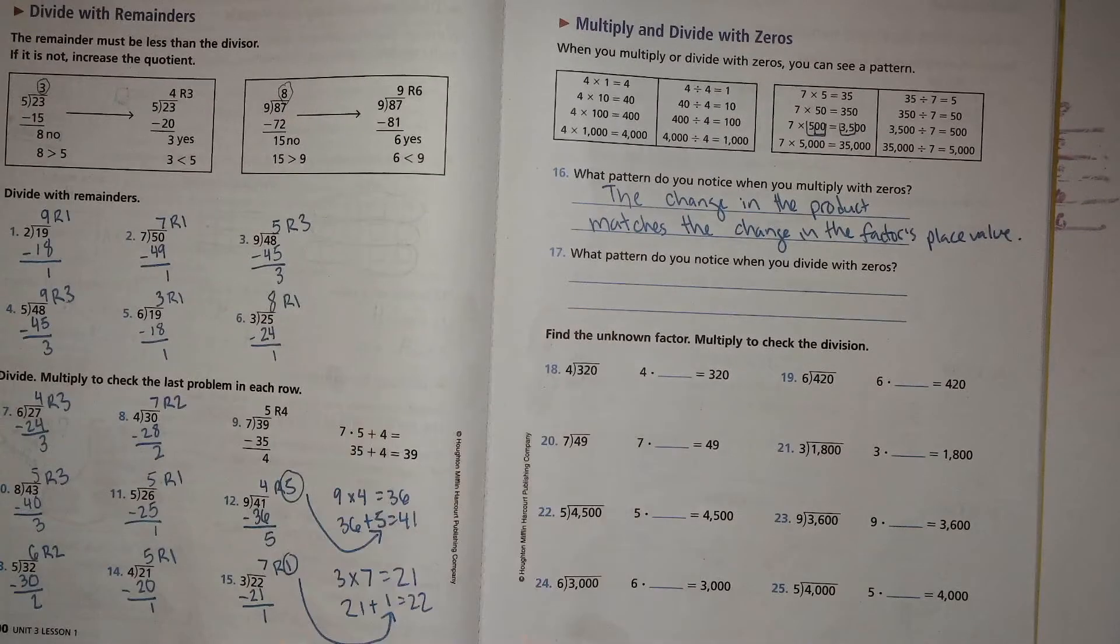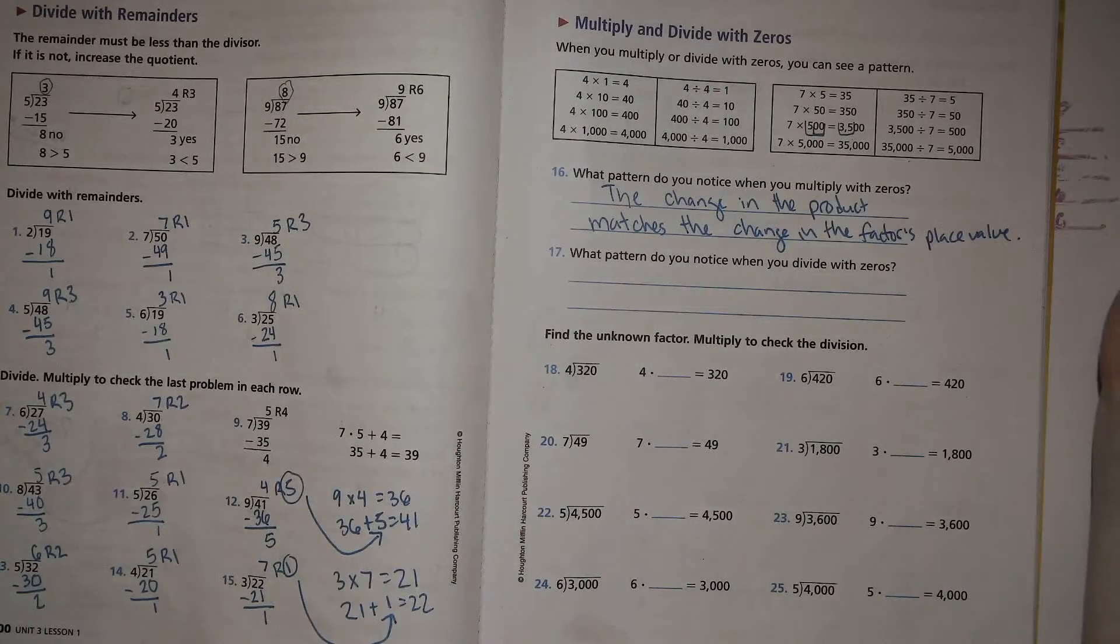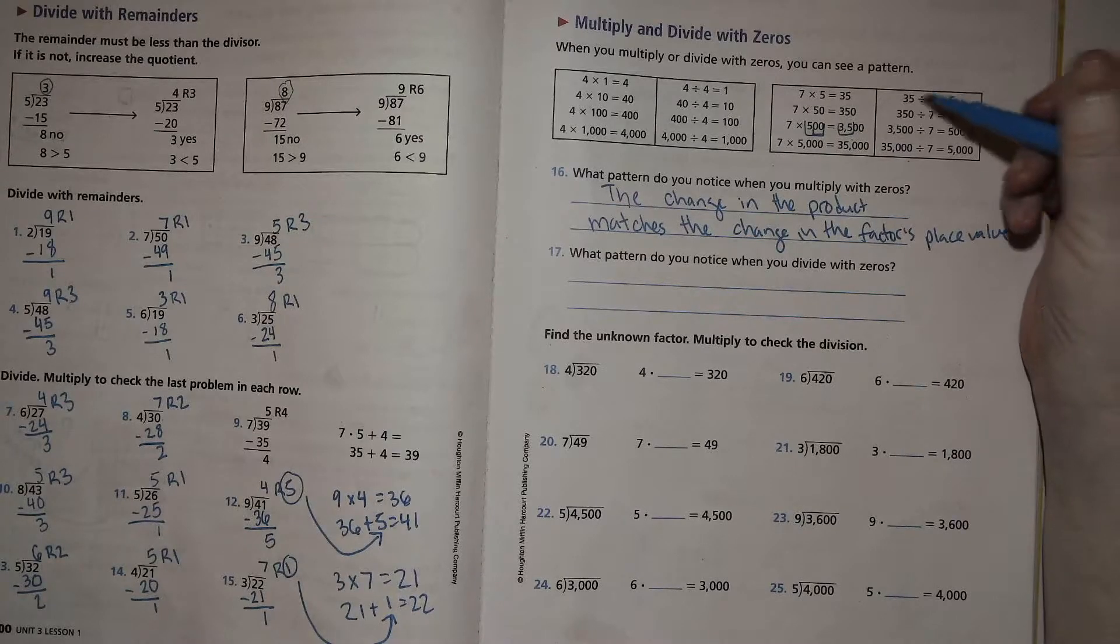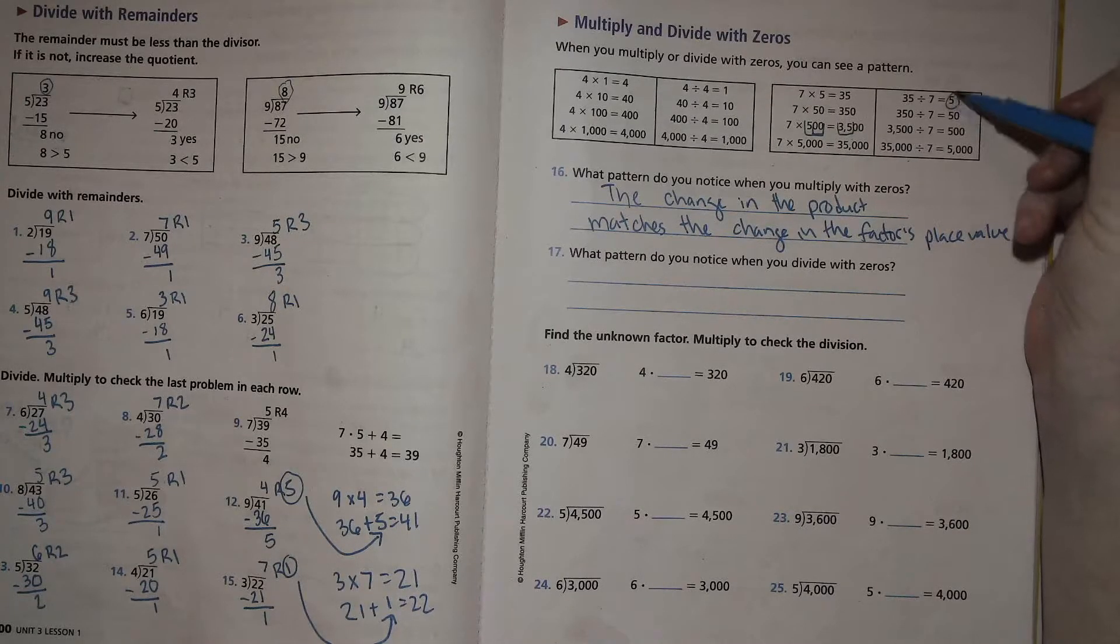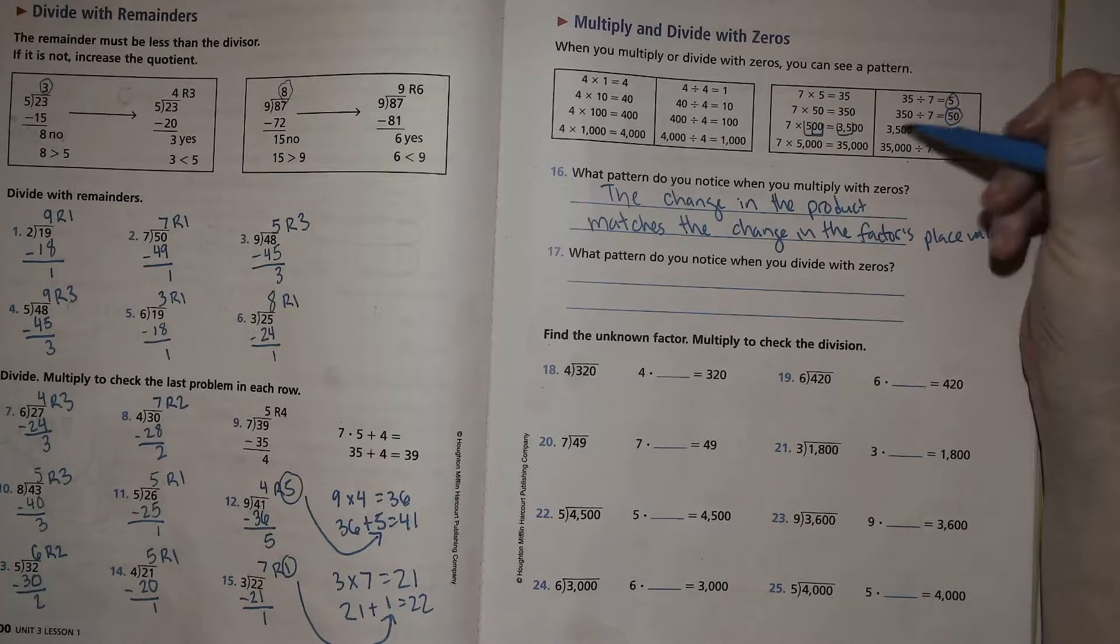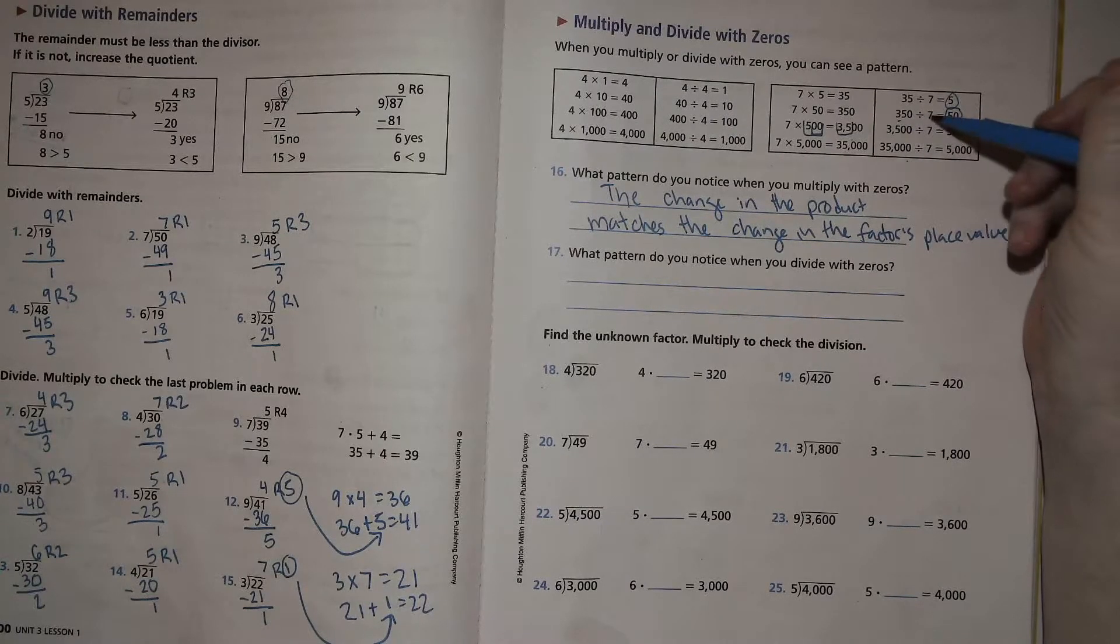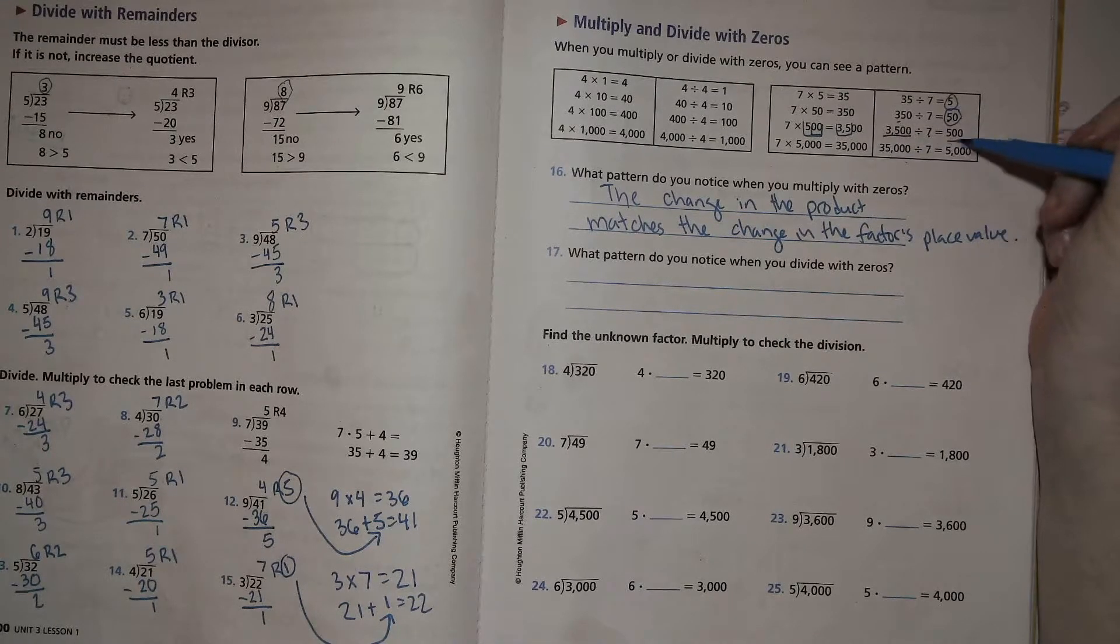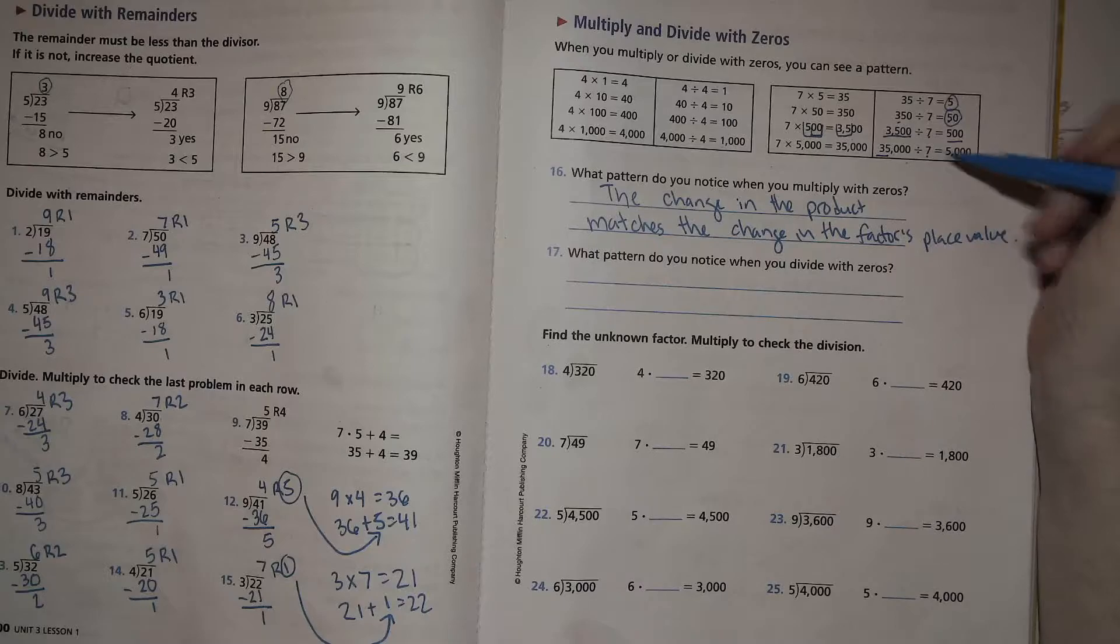Okay. What pattern do you notice when you divide with zeros? So take a look. 35 divided by 7 is 5. 350 divided by 7 is 50. 35 tens divided by 7 is 5 tens. 3,500 divided by 7 is 500. 35,000 divided by 7 is 5,000.